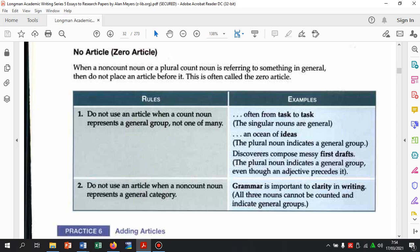Do not use an article when a count noun represents a general group not one of many. Jadi, ketika membahas kata benda yang merepresentasikan grup secara general, kelompok kata atau kelompok orang, kelompok benda secara general, bukan salah satu dari kelompok tersebut, jangan gunakan artikel. Contoh. Often from task to task. Nggak mungkin from a task to a task. An ocean of ideas. Ada of di sini. Jangan pakai the lagi. Langsung saja of ideas. Grammar is important to clarity in writing. Dia membahas grammar secara umum. Tidak pernah mespesifikan. Jadi, general category di sini.